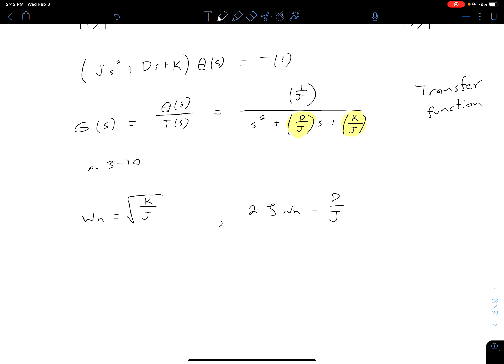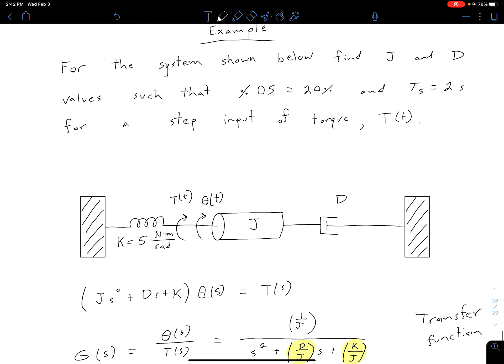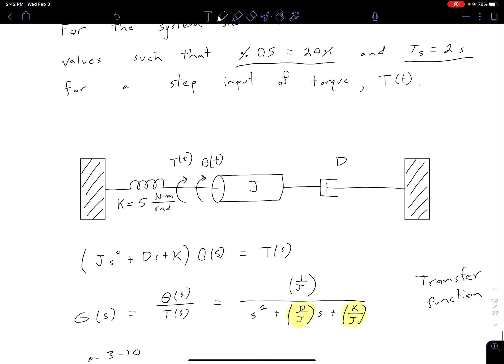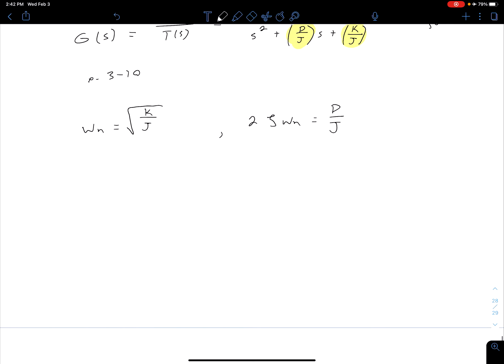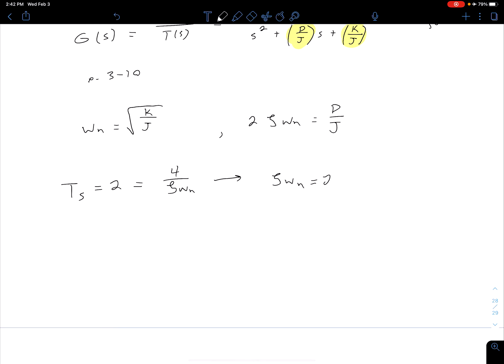Alright so now we want to go back to what we're looking for, a settling time of 2 and a percent overshoot of 20. We could start with either place but let's start with the settling time of 2. So we know we want T_S equal to 2 and in general we said that we can approximate our settling time as 4 divided by zeta times omega_n.